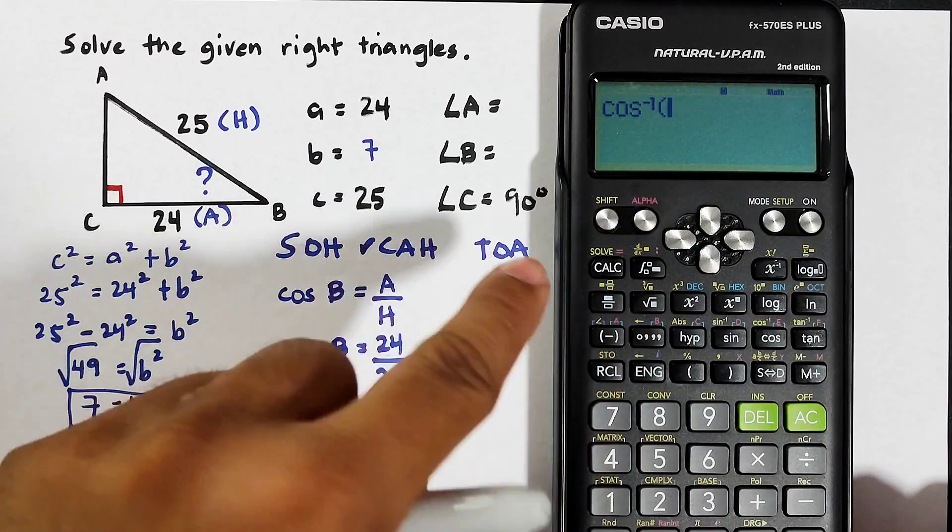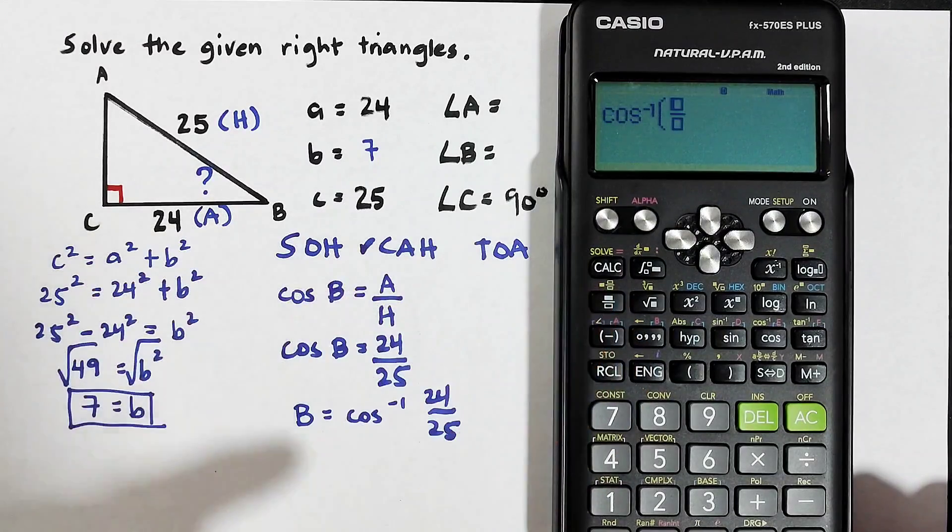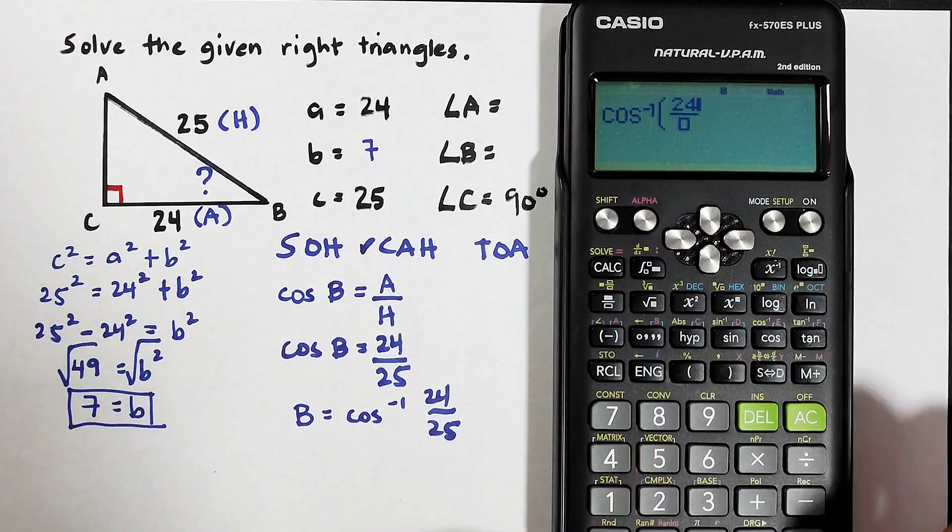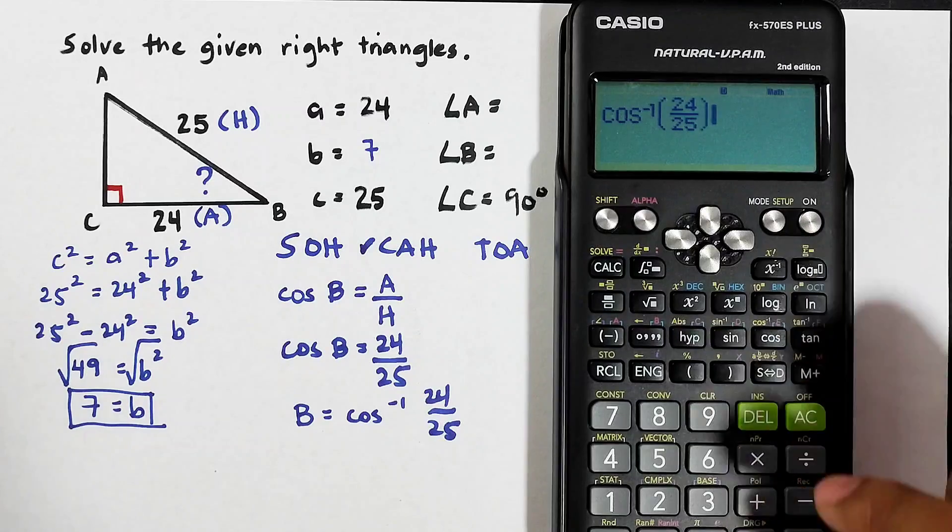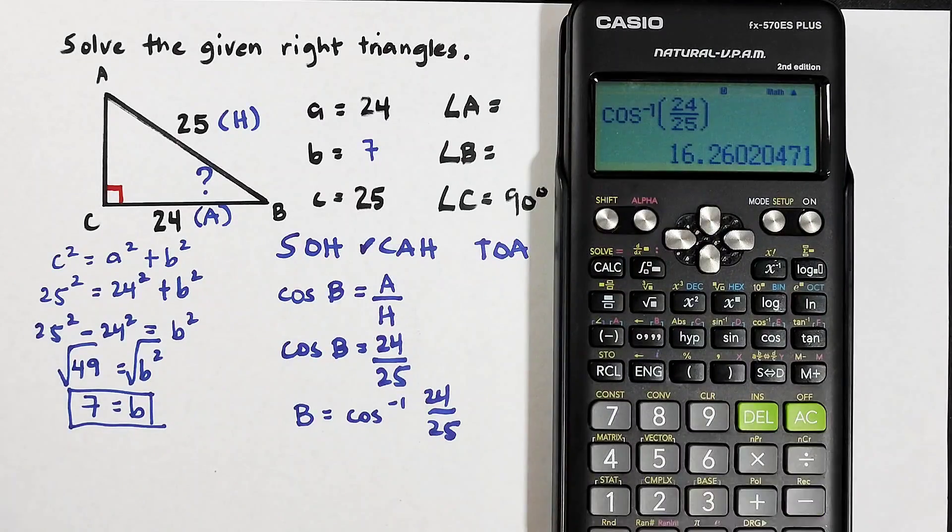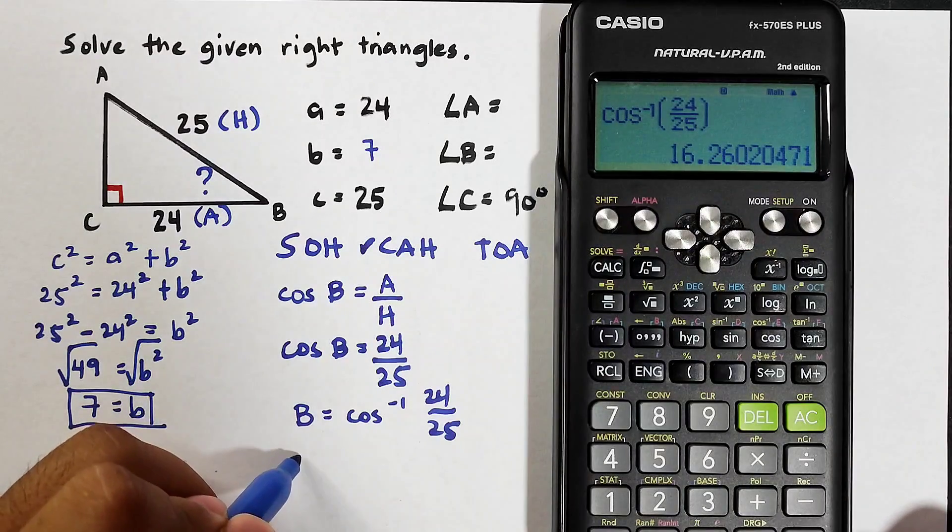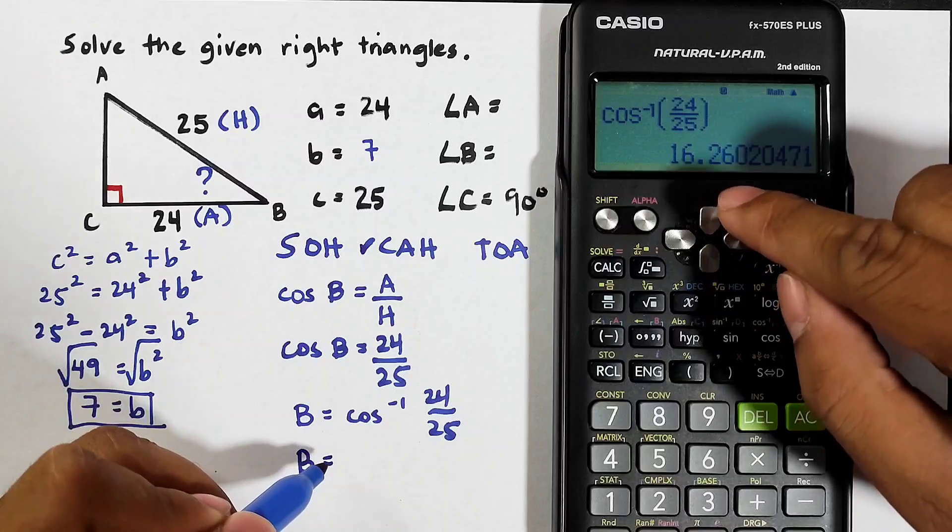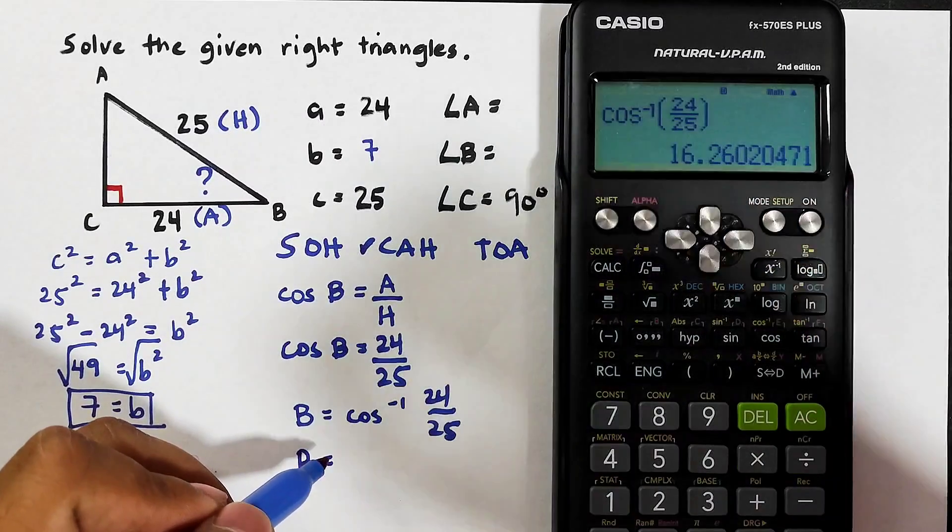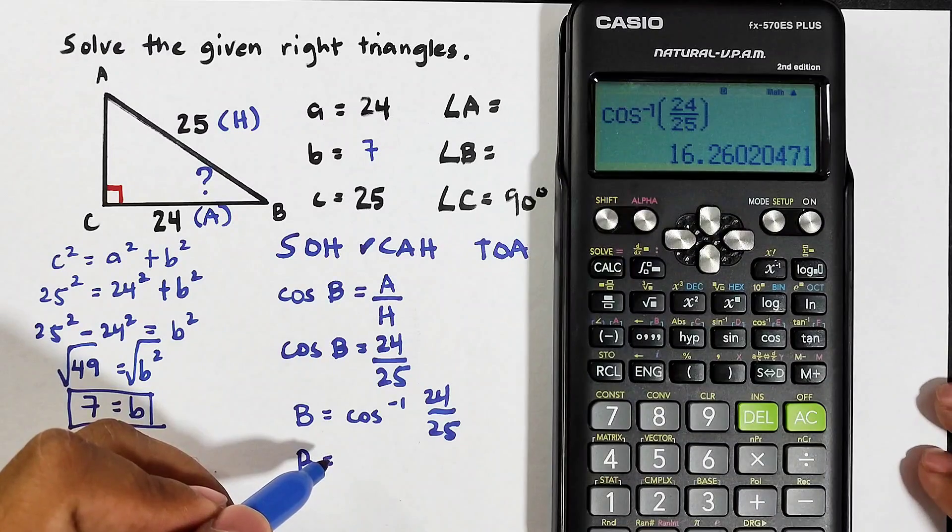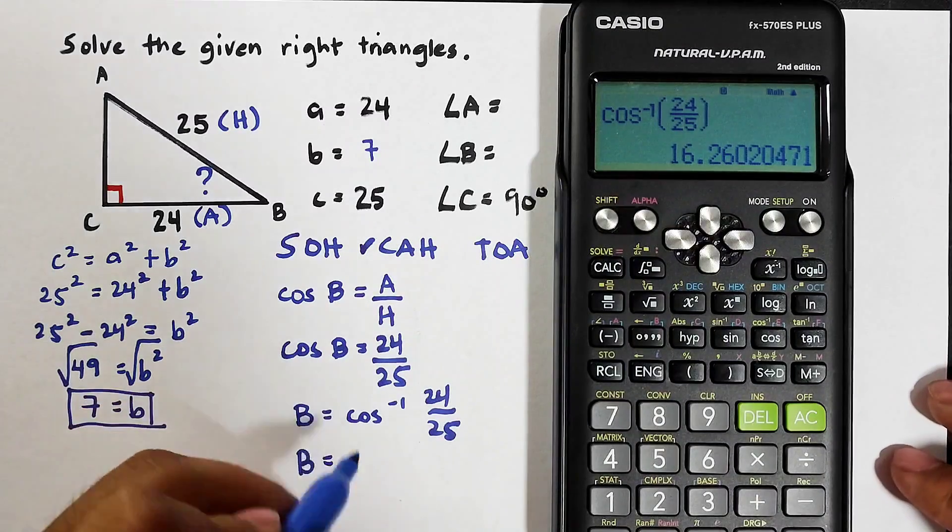So enclose that using the parentheses and then this is your answer. As simple as that. So as you can see your B is 16.26020471. We will round it off in one decimal place, that will be 16.3.